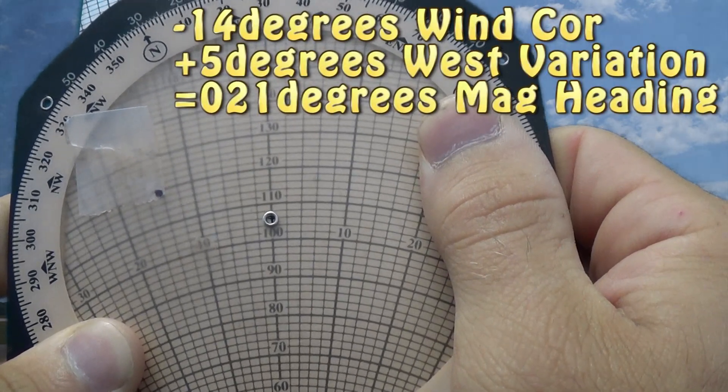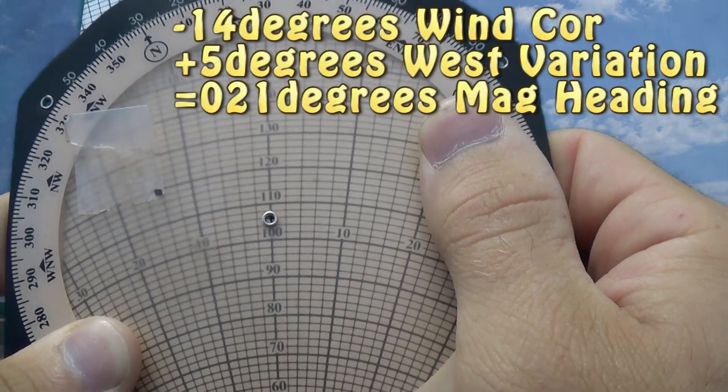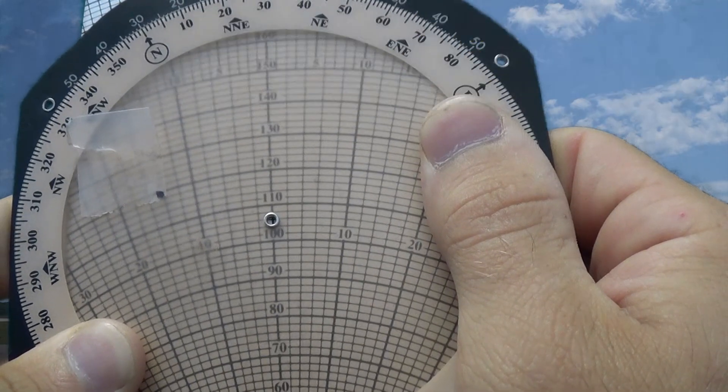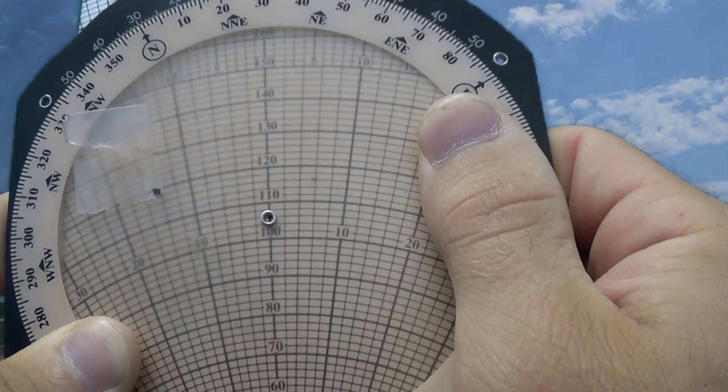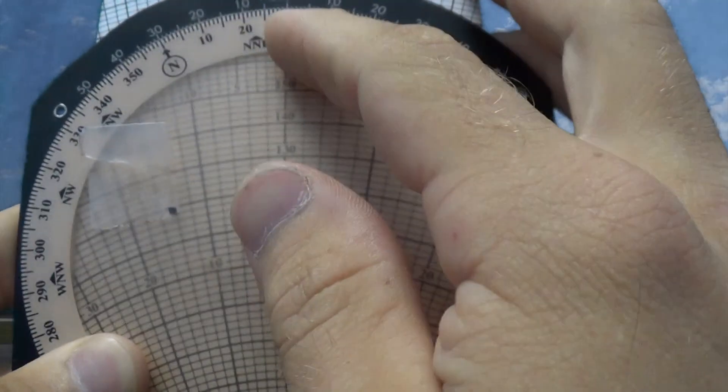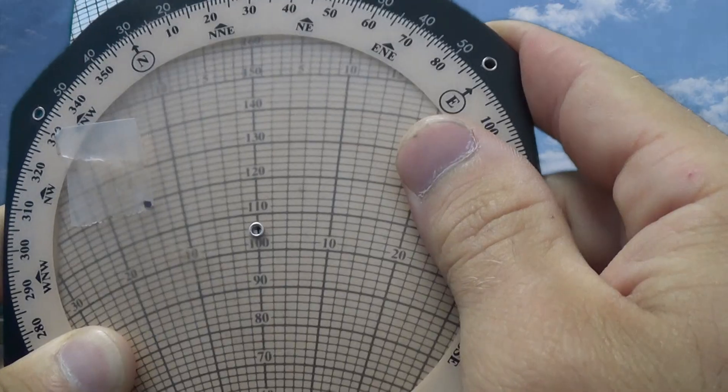So, 021 magnetic, 016 true heading, to track a 030 true course over the ground.